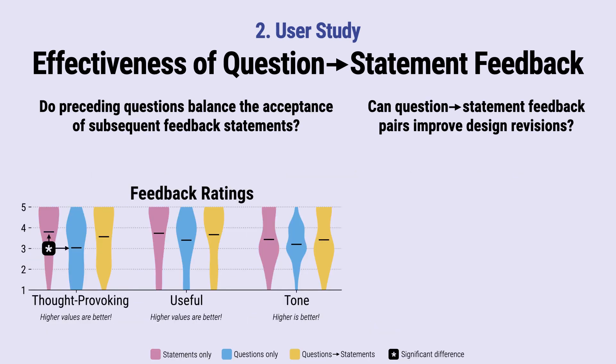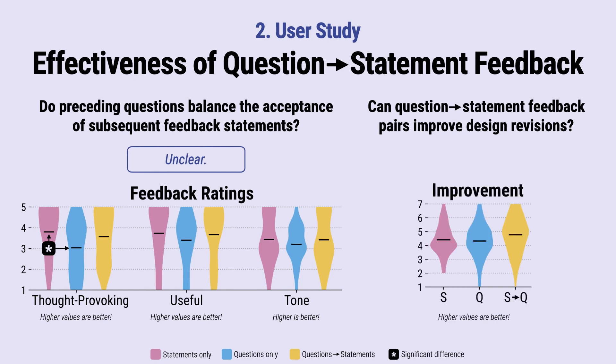Here are the participants' feedback ratings. Unfortunately, we did not find any clear indication that the feedback's acceptability differed. In particular, the usefulness rating did not change significantly between the three feedback types. However, looking at the improvement ratings of the revised designs, where higher values are better, we found that our method of combining feedback questions and statements led to significantly better design revisions compared to feedback in the form of statements or questions alone.